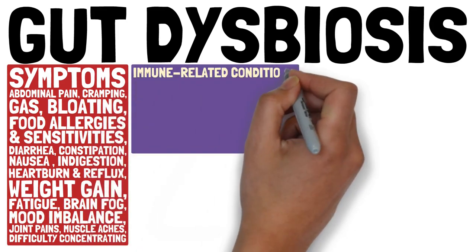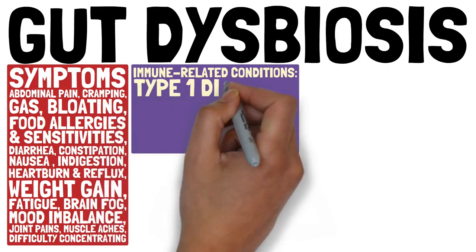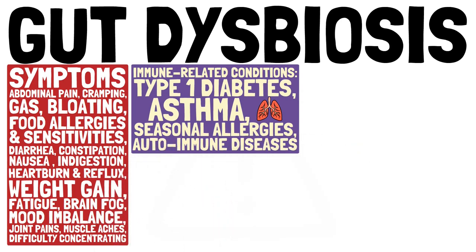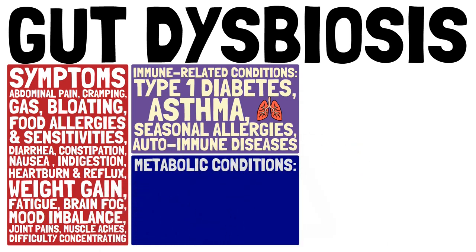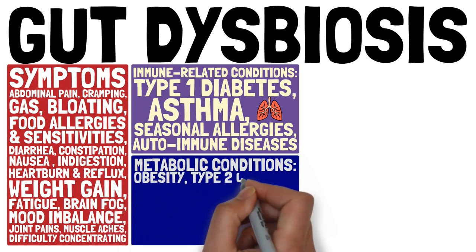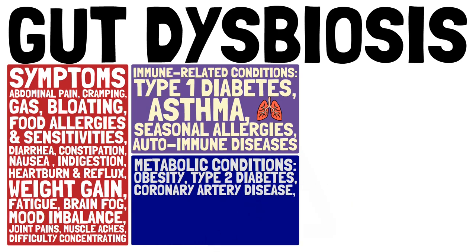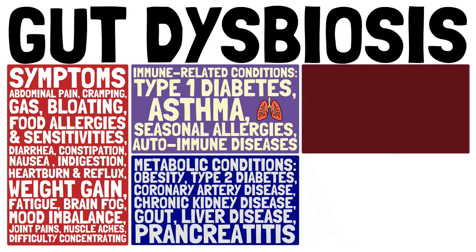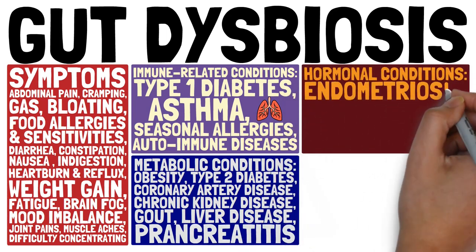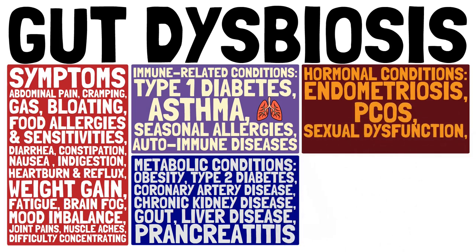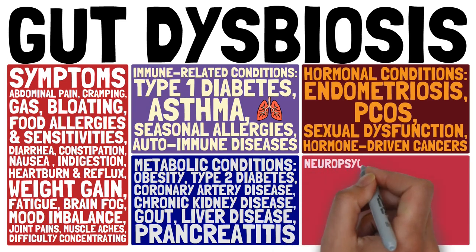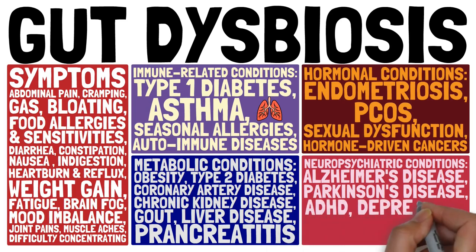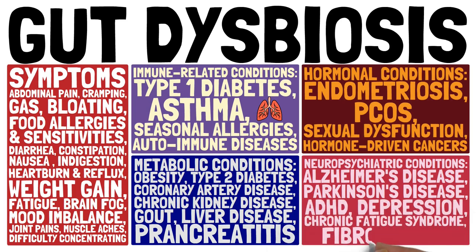Immune-related conditions associated with gut dysbiosis include type 1 diabetes, asthma, seasonal allergies, and various autoimmune diseases. Metabolic conditions include obesity, type 2 diabetes, coronary artery disease, chronic kidney disease, gout, liver diseases, and pancreatitis. Hormonal conditions include endometriosis, PCOS, sexual dysfunction, and hormone-driven cancers. Neuropsychiatric conditions include Alzheimer's disease, Parkinson's disease, ADHD, depression, chronic fatigue syndrome, and fibromyalgia.